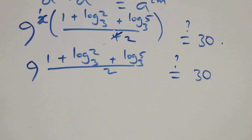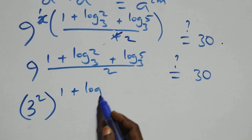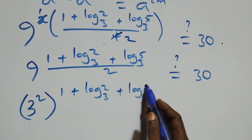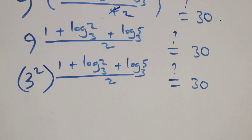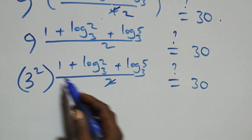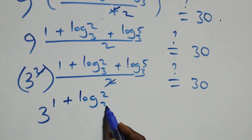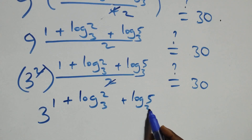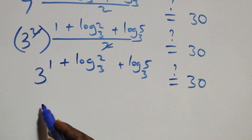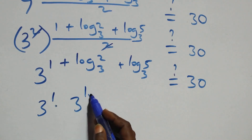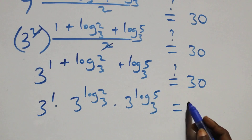We express 9 as 3 squared: (3²) raised to power (1 + log₃2 + log₃5)/2 equals 30. The powers multiply, and the 2s cancel, giving 3 raised to power (1 + log₃2 + log₃5) equals 30. Applying the law of indices, this becomes 3¹ times 3^(log₃2) times 3^(log₃5) equals 30.